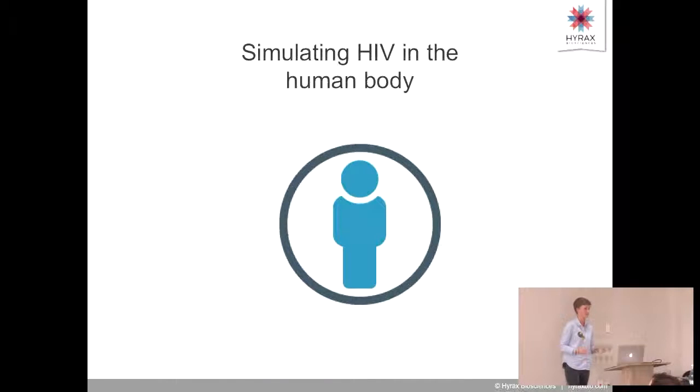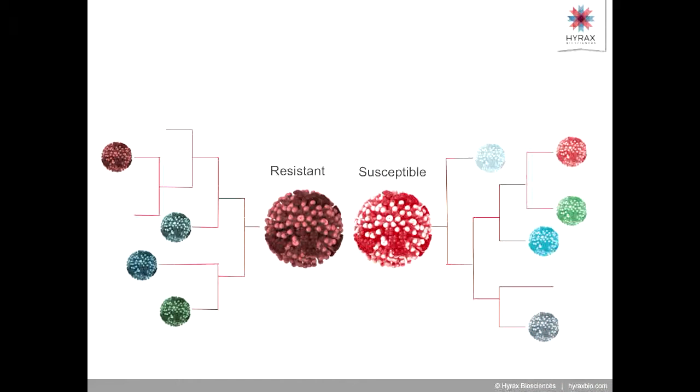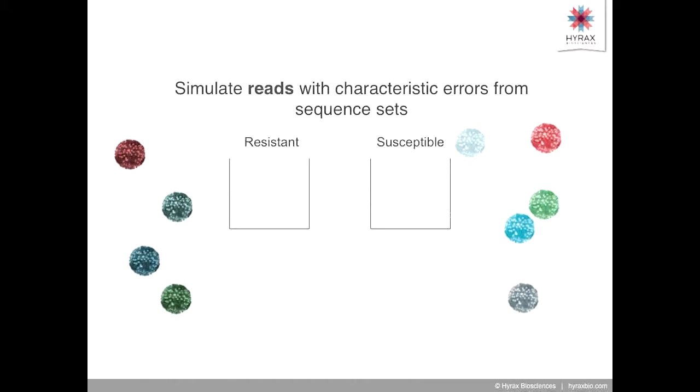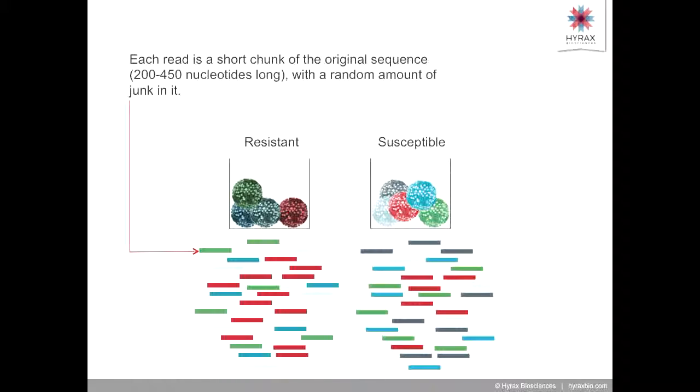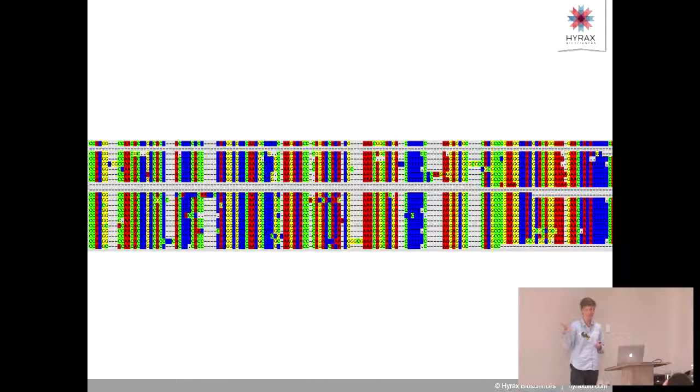So up until now, we've been talking about simulating HIV in the human body. We've got our tree of sequences. Now we're going to simulate the next generation sequencing process. We take this tree of sequences, stick them all in a box, and simulate next generation sequencing reads from them. Each of these reads is a short chunk of the original sequence, between 200 and 450 nucleotides long. The gene we're targeting is about 3,000 nucleotides long, so it's about 10% of the gene at each time. Each one has a random amount of junk in it: insertions, deletions, and substitutions that weren't actually in the original sequence. Just to remind you how messy things are, that's how messy they are. This is what we're getting out of these tools.